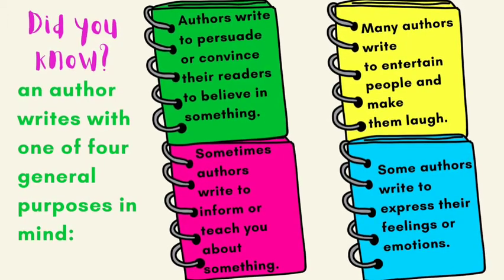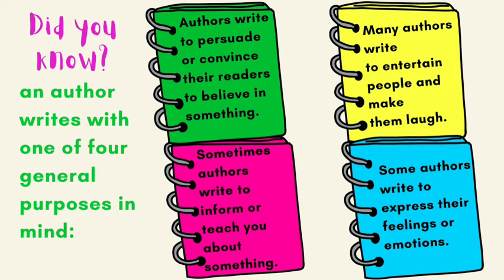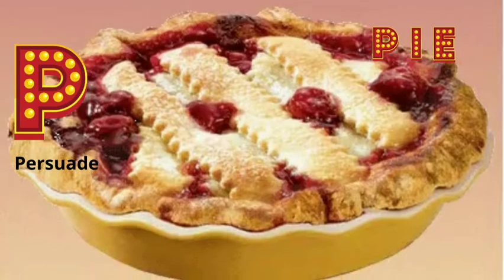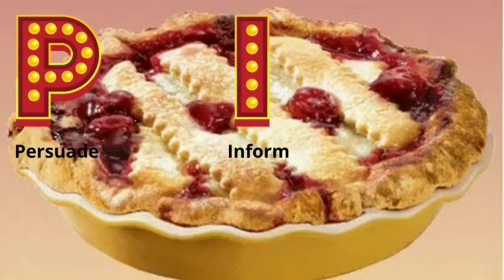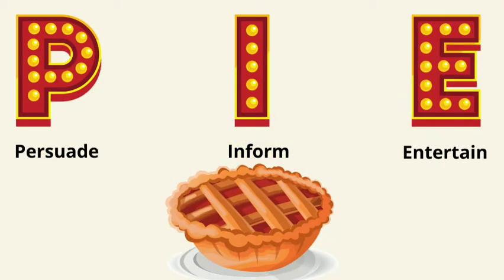Did you know an author writes with one of four general purposes in mind? Authors write to persuade or convince their readers to believe in something. Sometimes authors write to inform or to teach you about something. Many authors write to entertain people and make them laugh. Some authors write to express their feelings or emotions. You will see three common author's purposes identified with the acronym P.I.E. — Persuade, Inform, and Entertain. However, for the purpose of this video, we will focus on four, to include Describe.